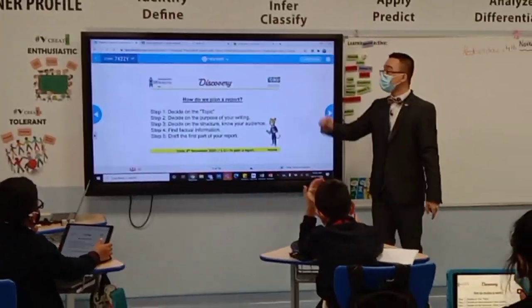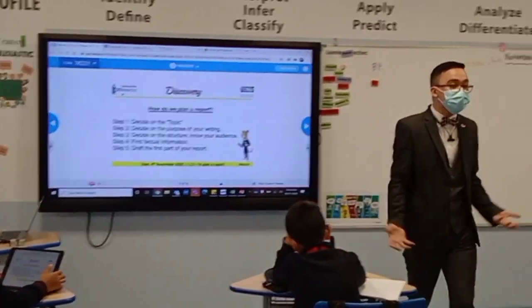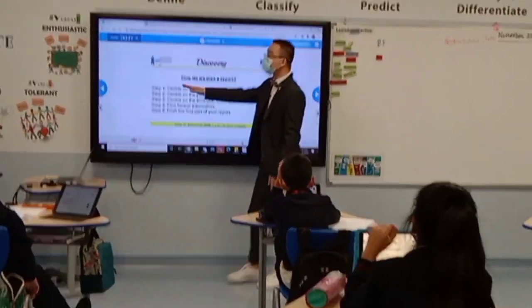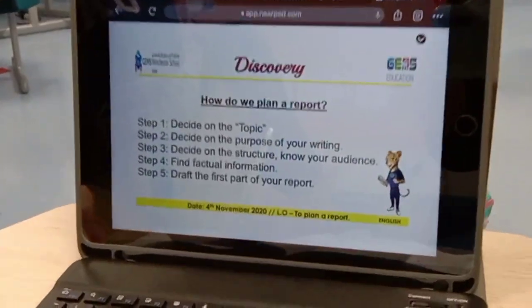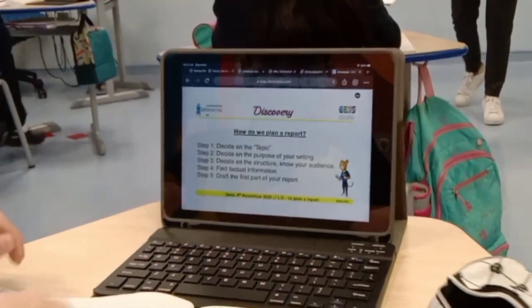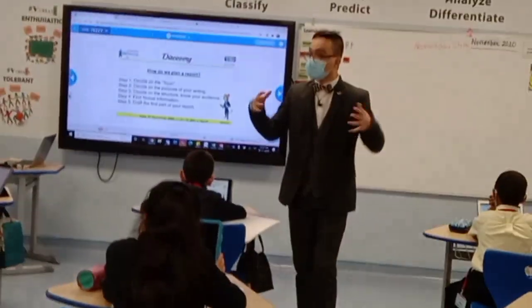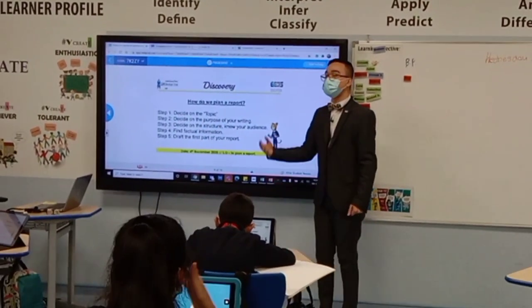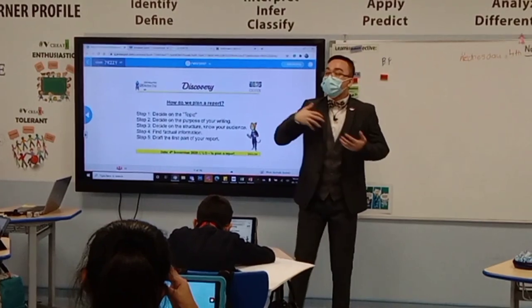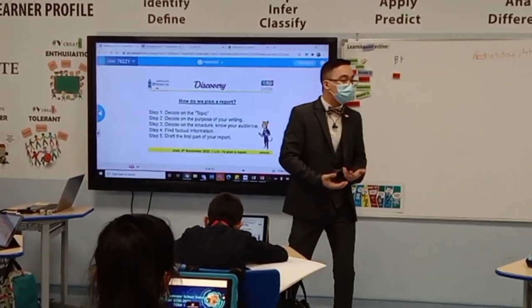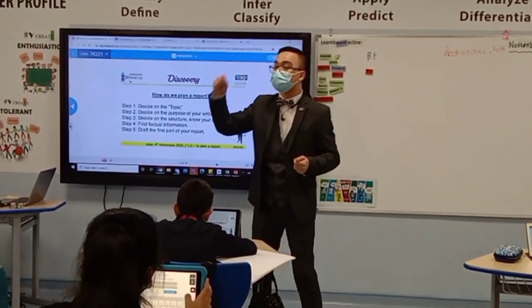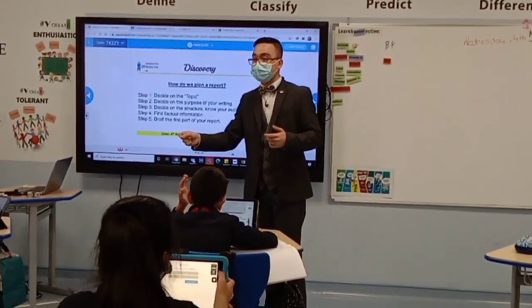Let's now discover ways on how we can plan a report. I have a step-by-step procedure. Number one: you have to decide about the topic — the topic is very important. Once you have the topic, you have to decide the purpose of your writing — the reason why you are writing this kind of topic and why you want to address it to your audience.